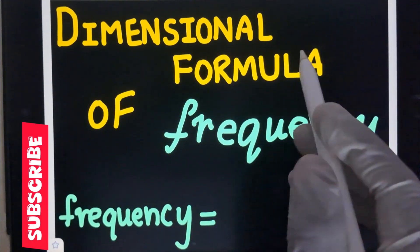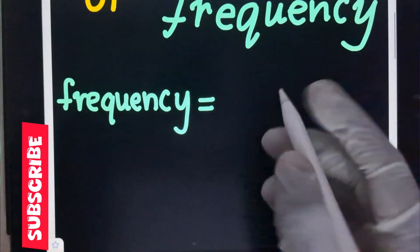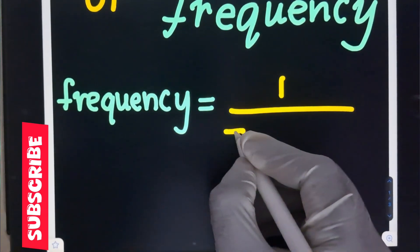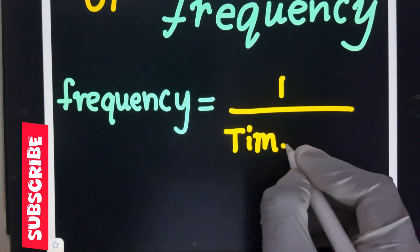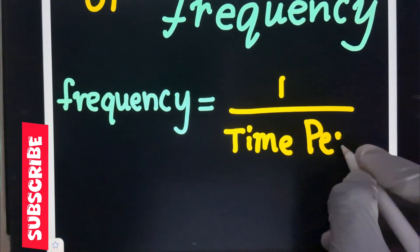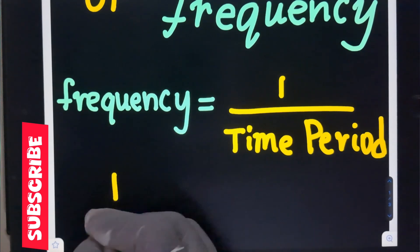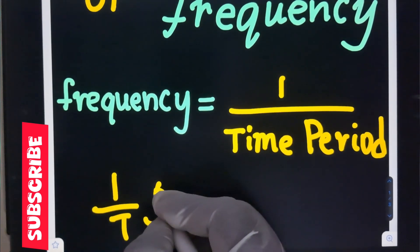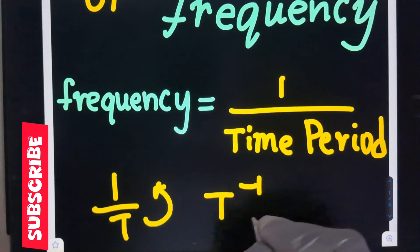Dimensional formula of frequency. Frequency is equal to 1 by time period. So frequency is inversely proportional to time. When time is reciprocated, 1 by t becomes t power minus 1.